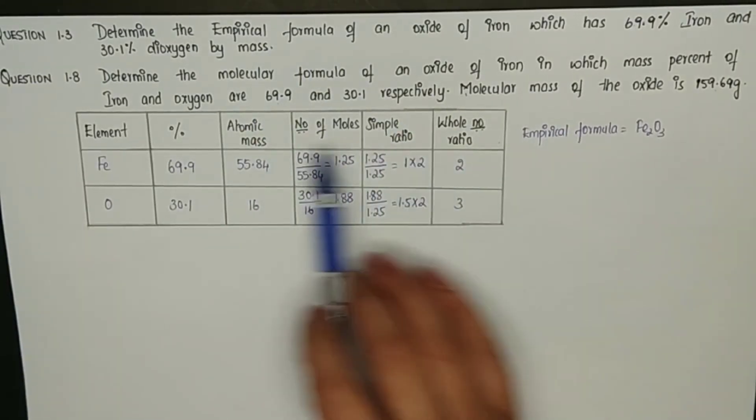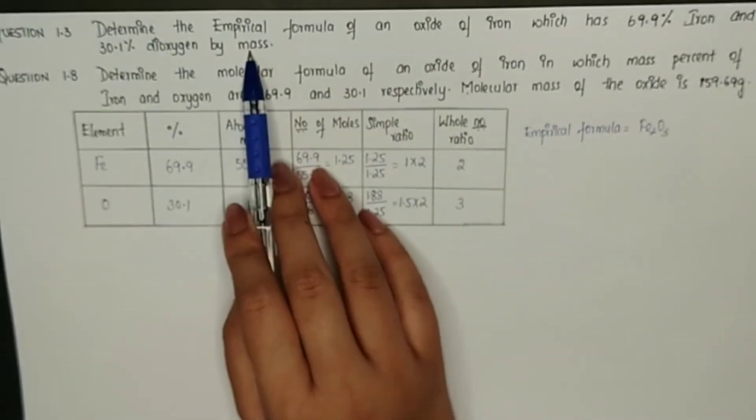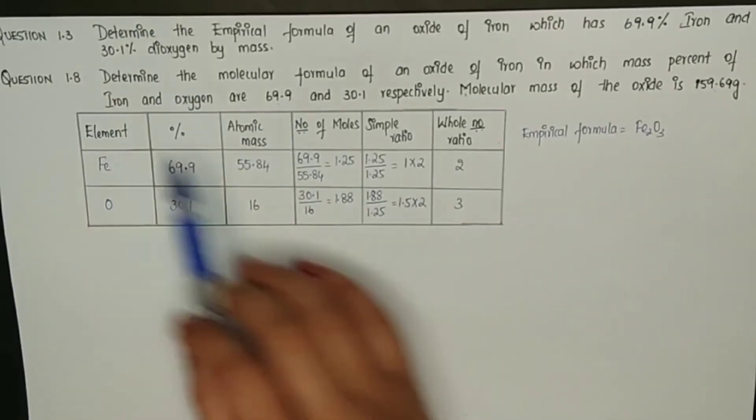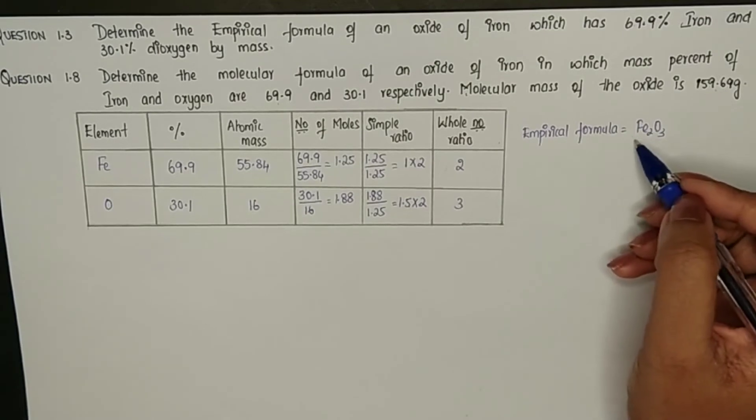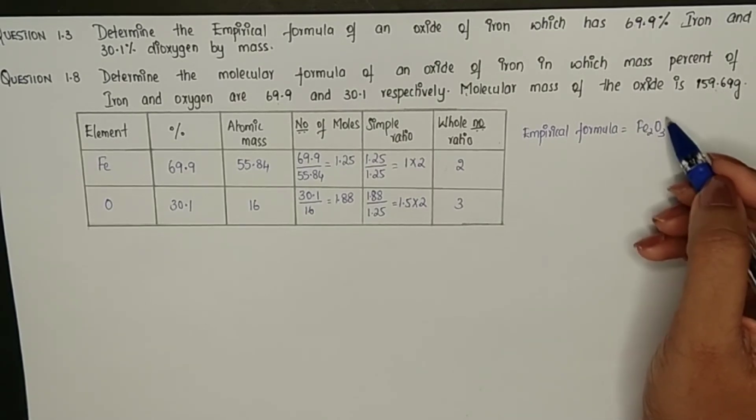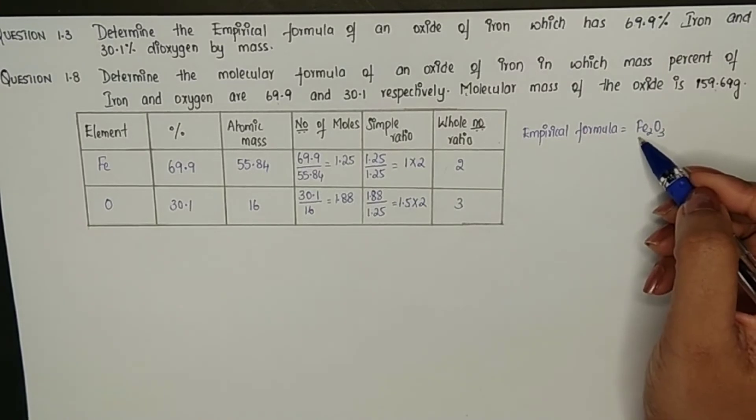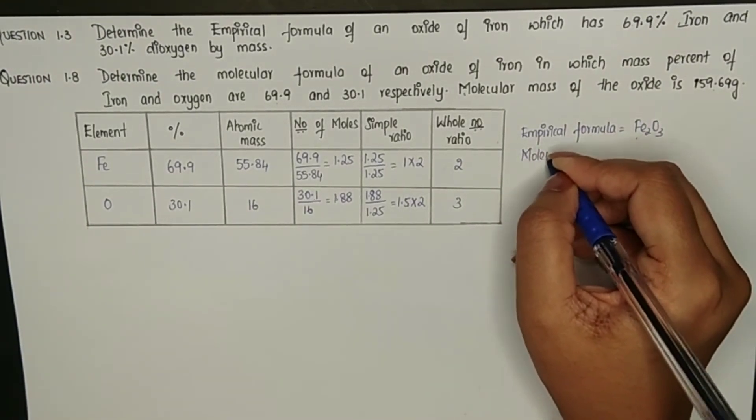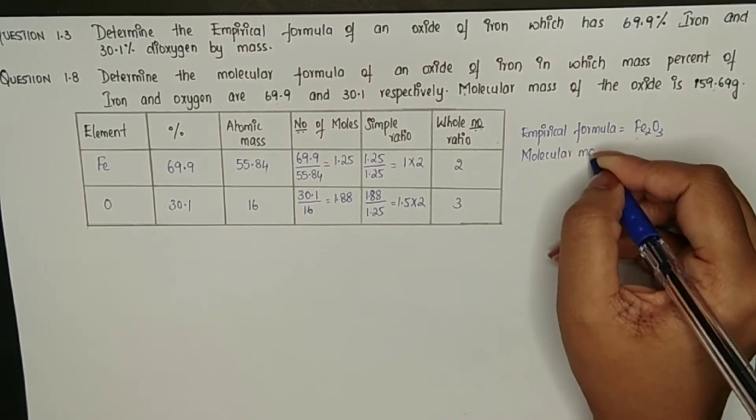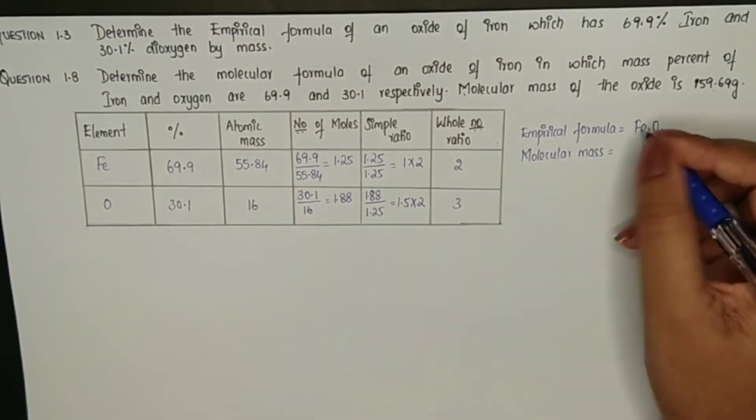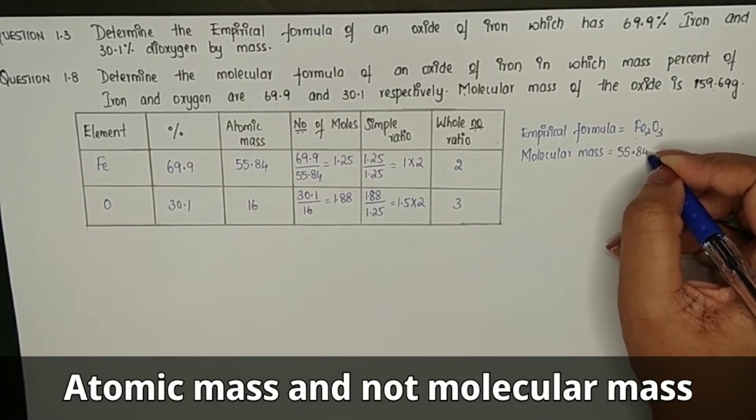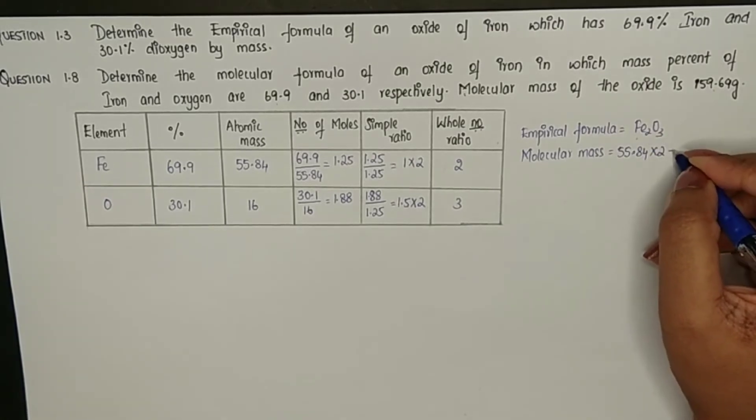But if you are asked for the molecular formula based on 1.8, we need to go further. First we calculate the molecular mass of this empirical formula. Iron molecular mass is 55.84 times 2 because I have 2 atoms plus atomic mass of oxygen is 16 times 3. This is going to be the molecular mass of Fe2O3.